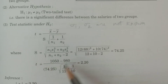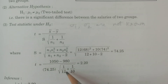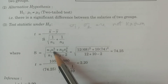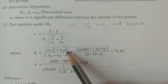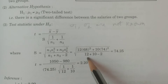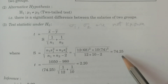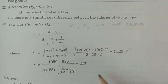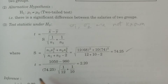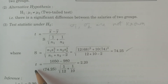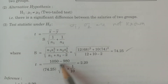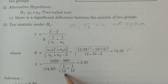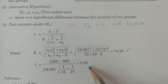Calculating capital S: S = √[(12 × 68² + 10 × 74²) / (12 + 10 − 2)] = √[.../ 20] = 74.25. Now calculating the t statistic: t = (1050 − 980) / [74.25 × √(1/12 + 1/10)]. Calculating this value gives t = 2.20.